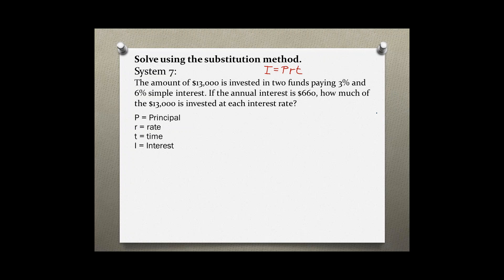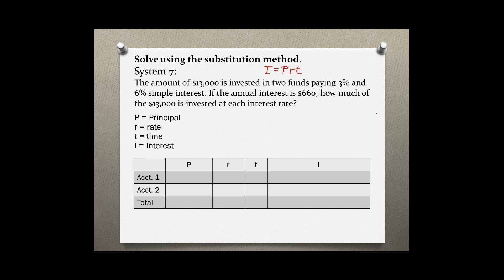Whenever I use a formula I like to use a table to help me organize the information. I set up a table with my first account, my second account, and the total of both accounts, with columns for principal, rate, and time which equals interest. The $13,000 is my total principal.